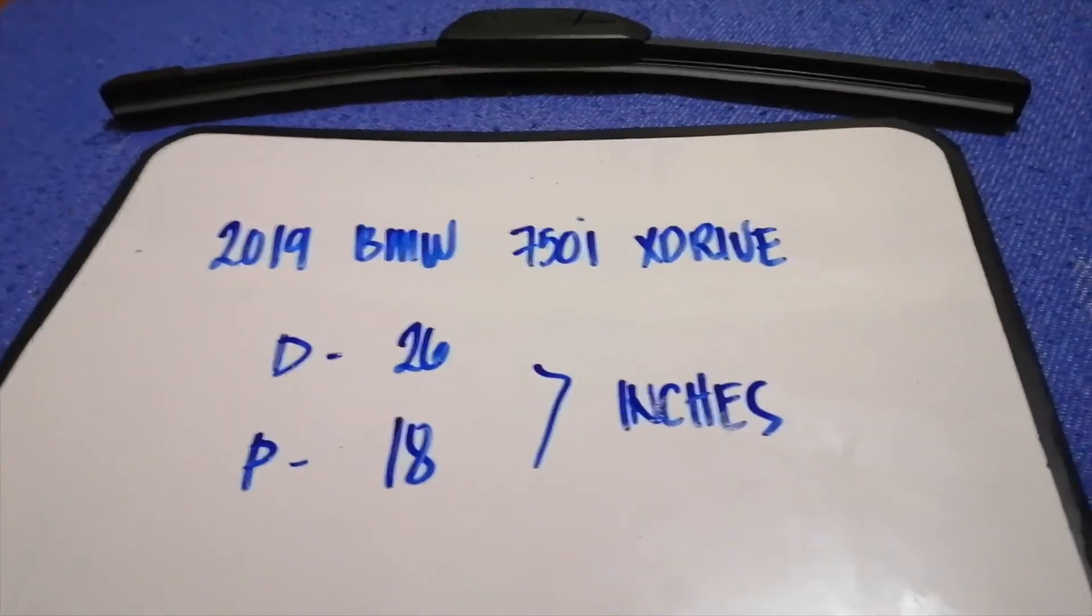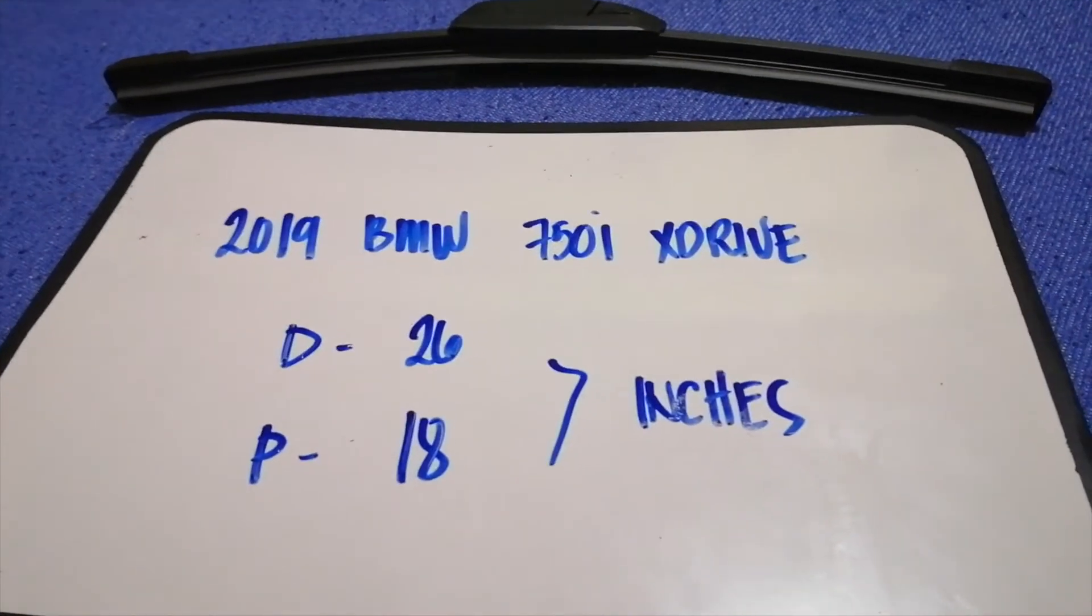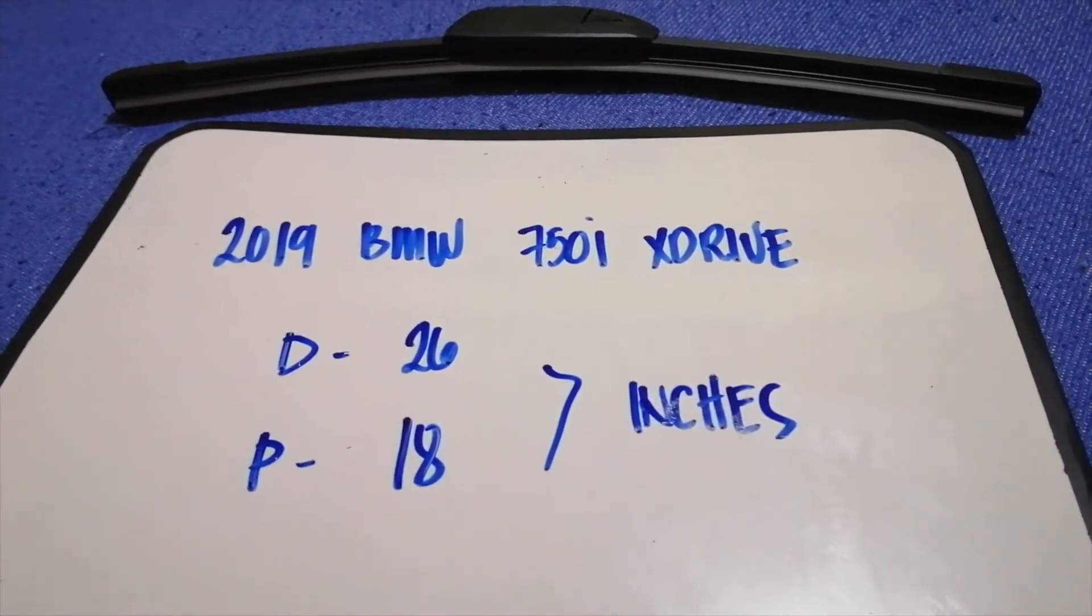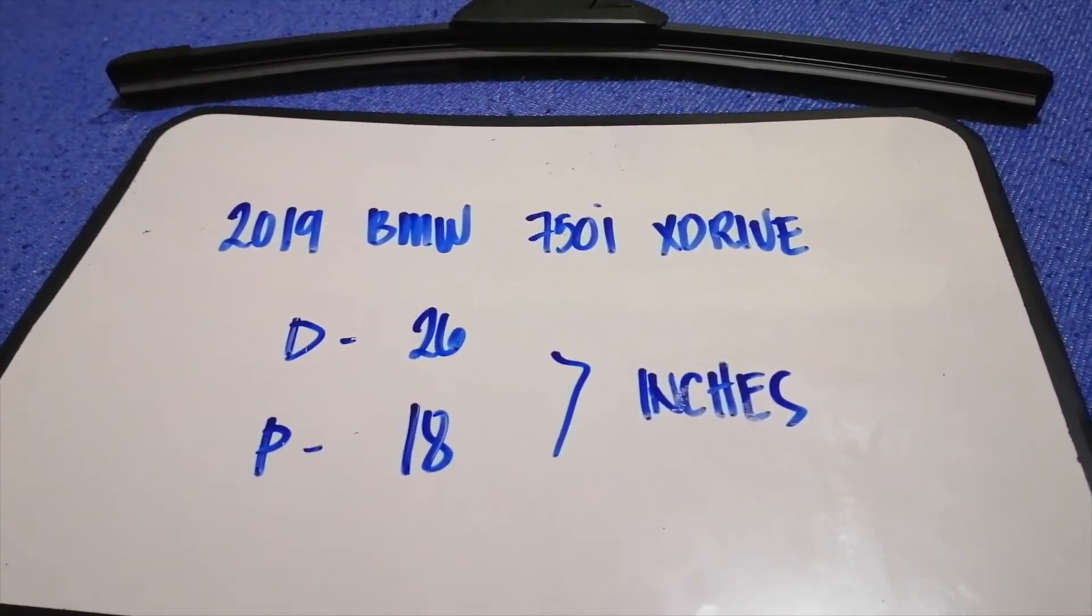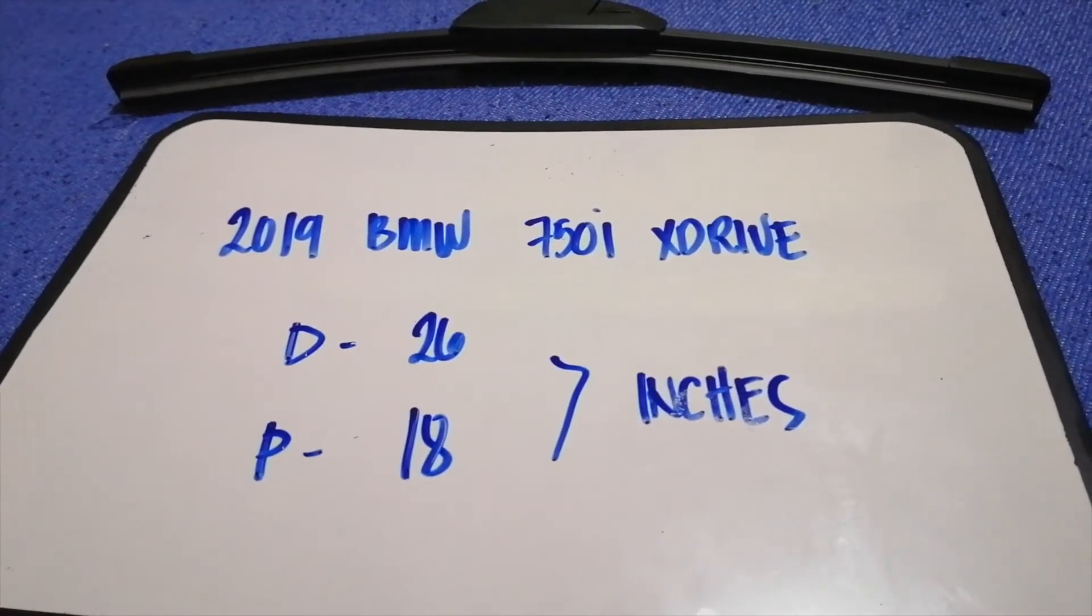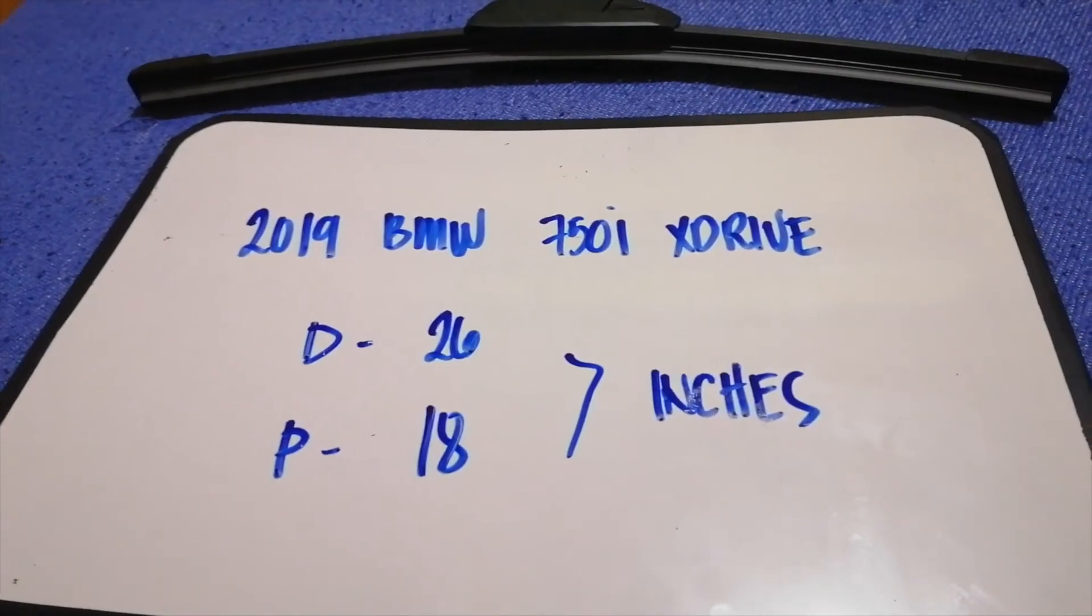So once again, the wiper blade replacement size for the 2019 BMW 750i X-Drive is 26 inches for the driver and 18 inches for the passenger.